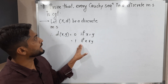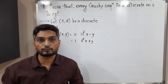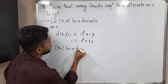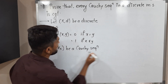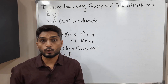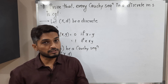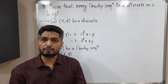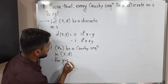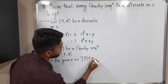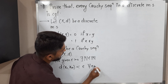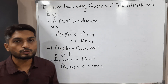In such a discrete metric space, we have to prove that every Cauchy sequence is convergent. So let us take a Cauchy sequence. Let {x_n} be a Cauchy sequence in (X, D). We are all familiar with the definition of a Cauchy sequence: for given epsilon greater than 0, there exists a natural number N such that D(x_n, x_m) less than epsilon for all n, m greater than or equal to capital N.